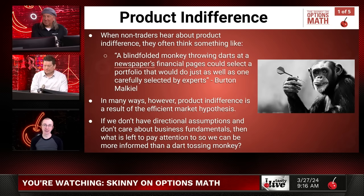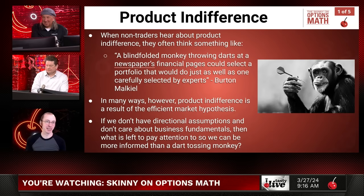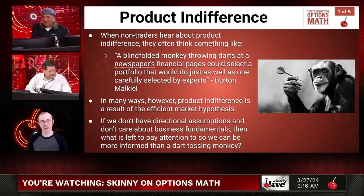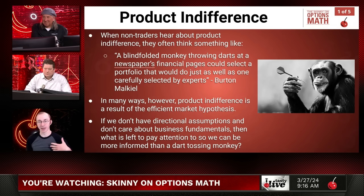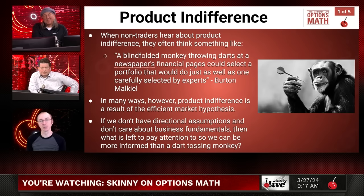If a non-trader hears product indifference, they come up with something like, oh so you guys are just monkeys tossing darts at a dartboard. Here's a quote from Burton Malkiel, author of A Random Walk Down Wall Street, a pretty big deal from Princeton. He says a blindfolded monkey throwing darts at a newspaper's financial pages could select a portfolio that would do just as well as one carefully selected by experts. One of our main points is to not let experts pick your stuff for you, because they're not really doing much better. This ties deeply into the efficient market hypothesis, which says the expected future value of any asset is its current value adjusted by the risk-free rate, so there's not really a reason to care about one thing versus another. Let's get into what is there left to pay attention to so that we can be a little bit better than a monkey tossing darts.